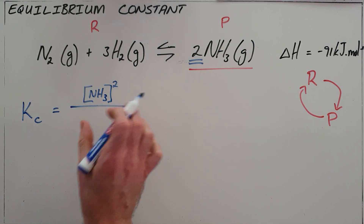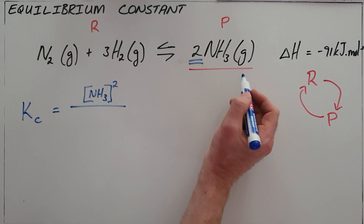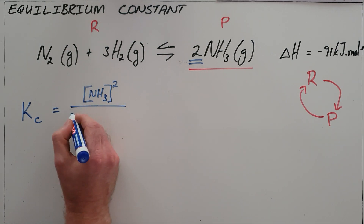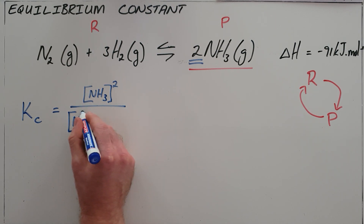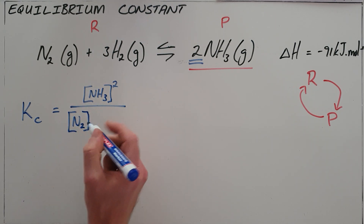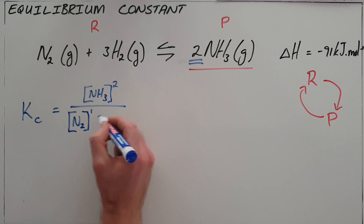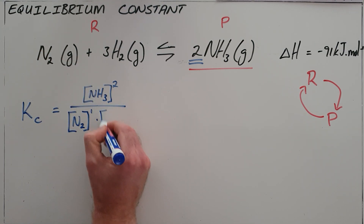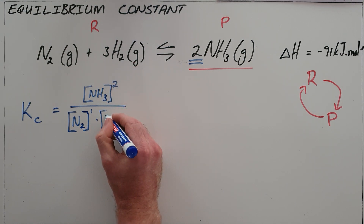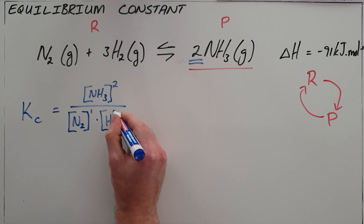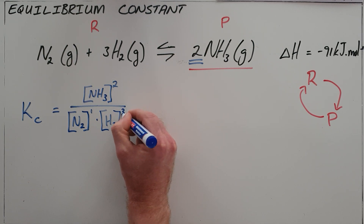Because this is a ratio we can often write them as fractions — the ratio of our products to that of our reactants. This gives us the concentration of nitrogen to the power of its exponent, which in this case is one, multiplied by the concentration of hydrogen to the power of its exponent.